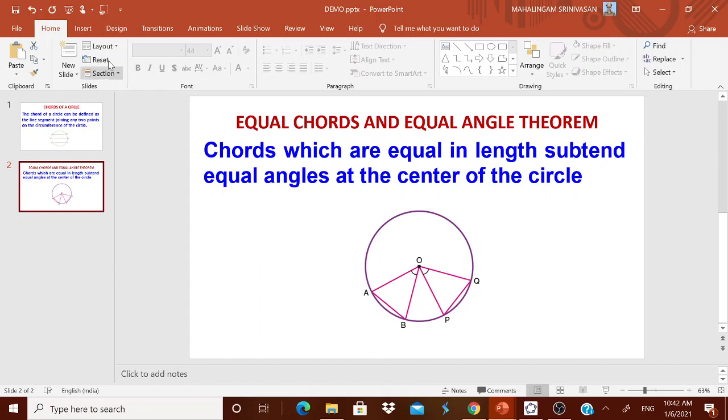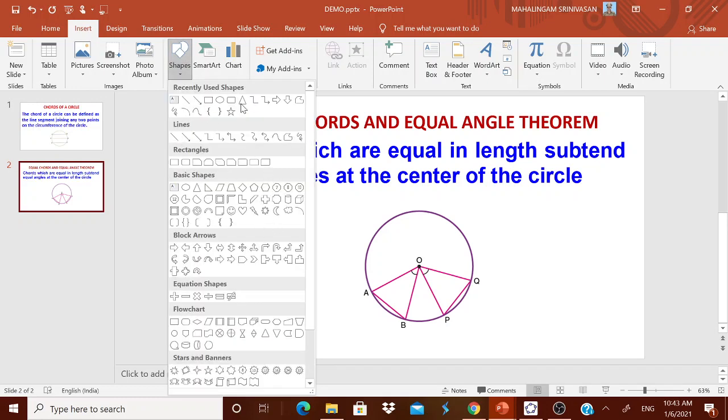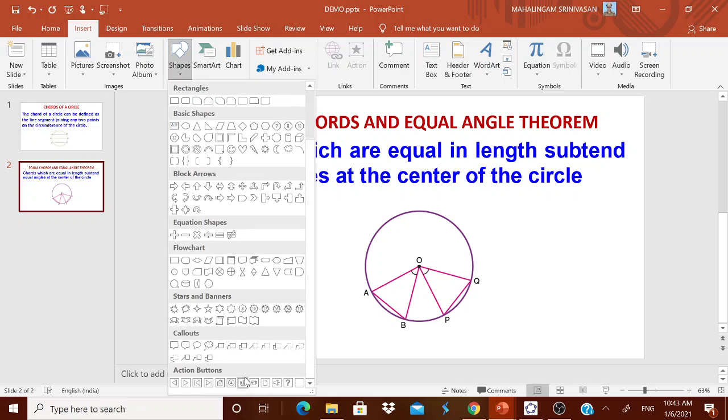Now to get the link, go to this insert. Go for this shapes. In the shape, already you might have used all these shapes. Maybe rectangle. Basic shape. Everything you have used. Come down, you are seeing action button. What is the meaning of action button. When you click that button, some action will happen. Now you see this action button. All of them. When you click it, something will happen. But we have to select that action button which will serve the purpose.